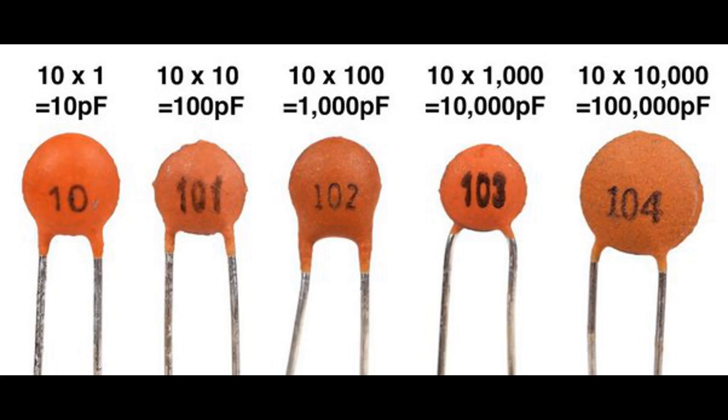Snubber circuits: Ceramic capacitors are used in snubber circuits to suppress voltage spikes and transient events in power electronics. They help to protect sensitive components from excessive voltage and reduce electromagnetic interference (EMI).